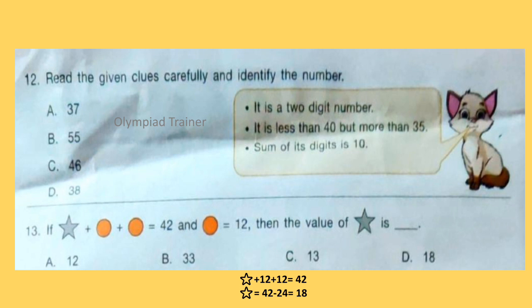Question 13: If star plus circle plus circle is equal to 42 and circle is equal to 12, then the value of star is dash. Options are given here. Answer is Option D, 18. Solution is shown here.